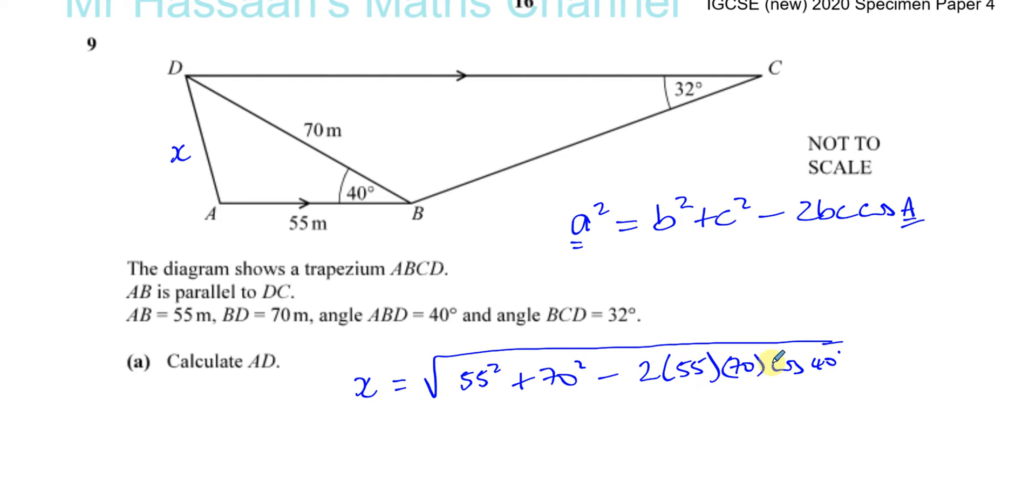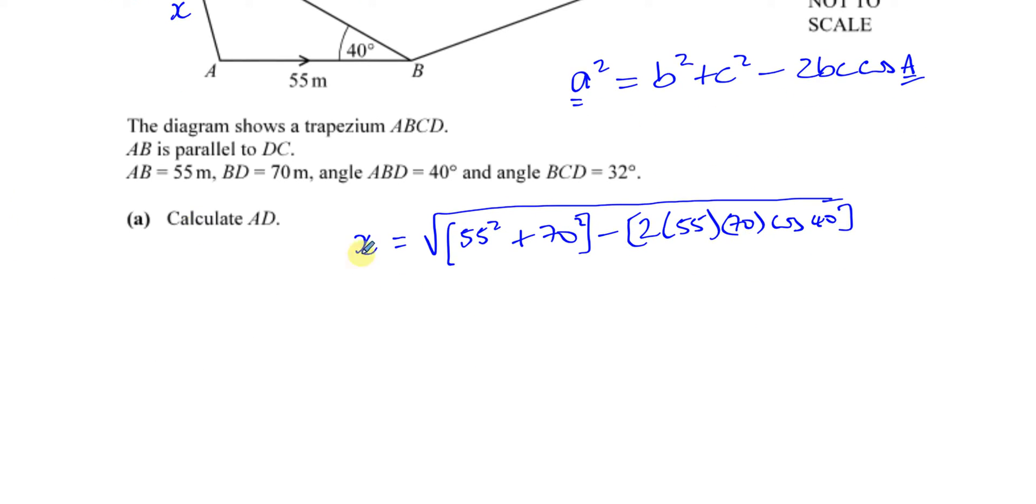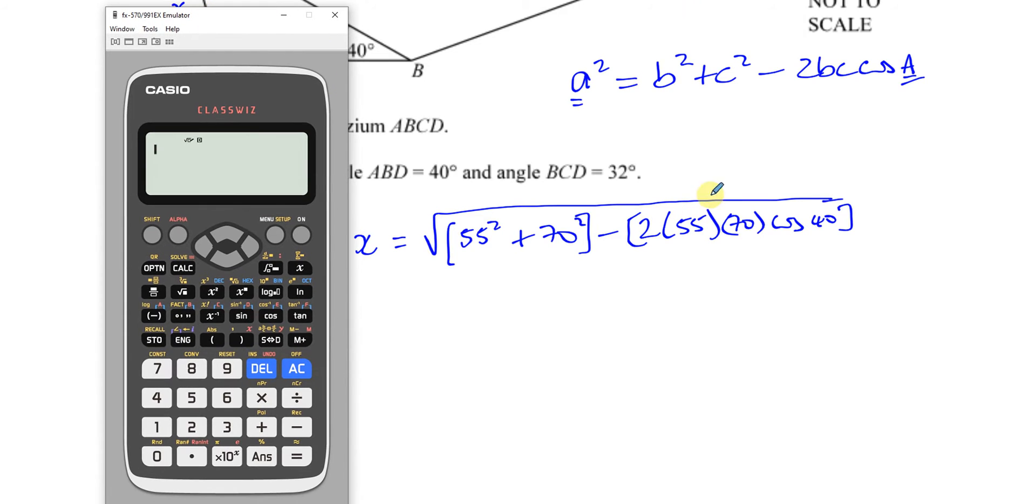Now be very careful here not to do this calculation incorrectly. There's a bit of mass here. So you cannot, for example, subtract 2 times 55 times 70 from this number here and then multiply by cosine 40. This is like a product that you have to find and then subtract from this. Your calculator will automatically do it properly. Multiplication comes before subtraction.